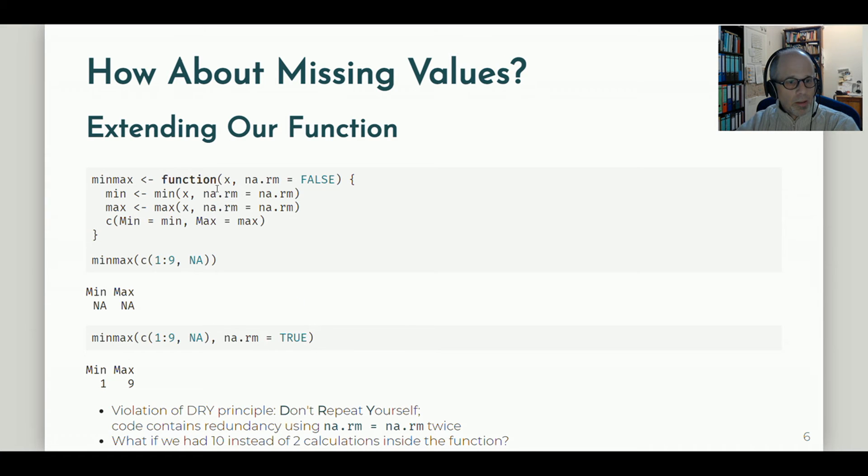We could say that this is a violation of the so-called DRY principle. DRY not as in the opposite of wet, but in Don't Repeat Yourself. So we have some redundancy in our code. We have to repeat this na.rm equals na.rm for each calculation we do inside our function body to pass on this argument.